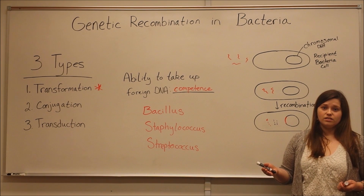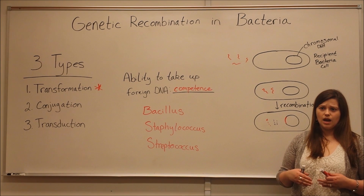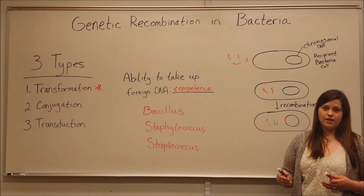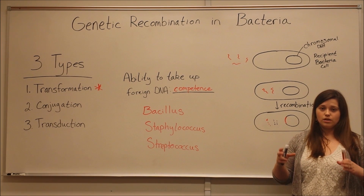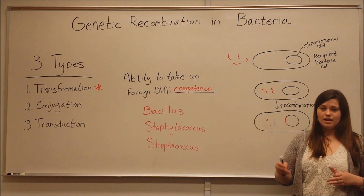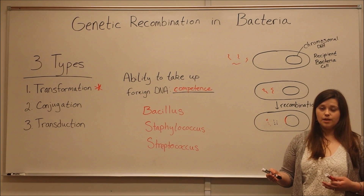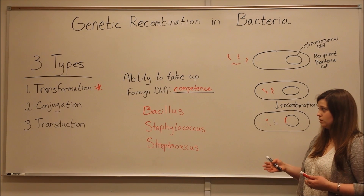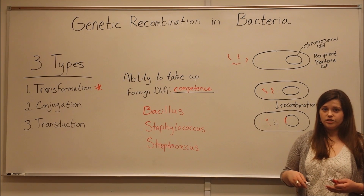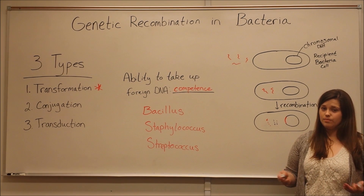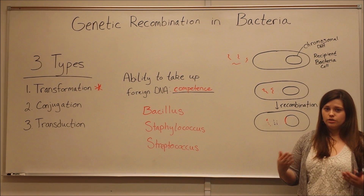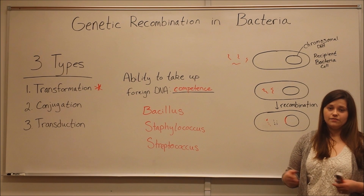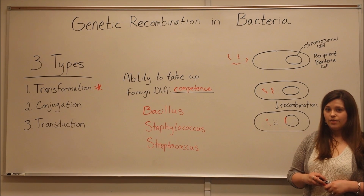This DNA could also encode for virulence factors. For example, one such virulence factor might be a capsule. If the bacteria can produce a capsule covering its outer cell wall, this may enable it to hide from a host's immune system. And so this is why the process of transformation is very important to bacterial cells in that it can enable them to survive in different environments that they might not have been able to otherwise.